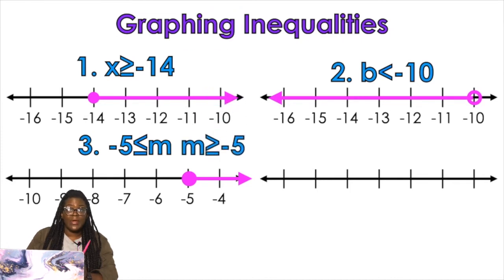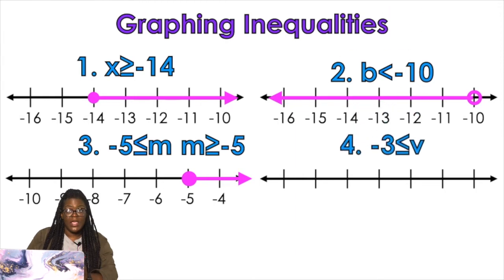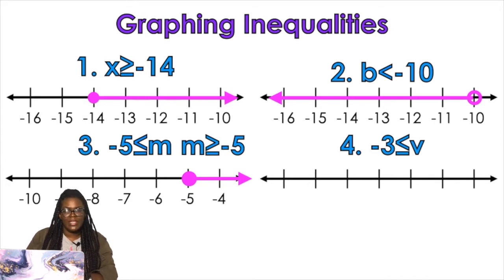Because the proper way to read that inequality is actually m is greater than or equal to negative five. So then I have example number four also done backwards. I want you to think about everything I just said for example number three and see if you can graph this one on your own.